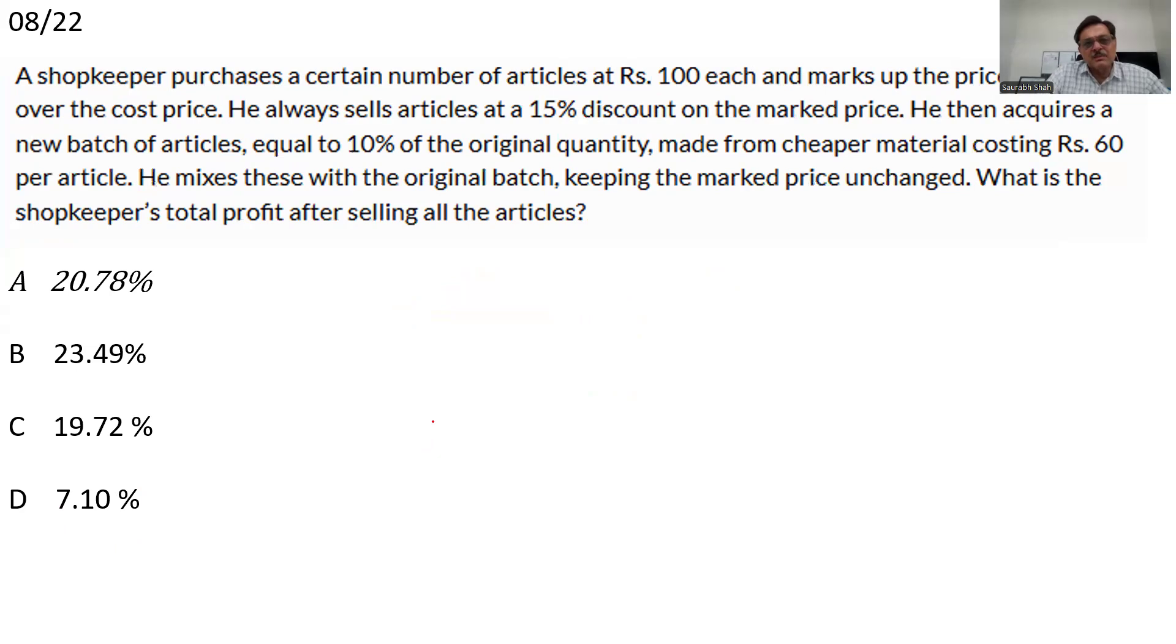9944. That is the total amount spent by Kumar on the bicycle. Total amount spent by Kumar on this bicycle is option D, 9944.